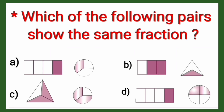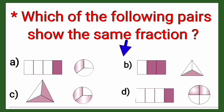Each option has two figures. Let's see which pair has the same fraction. In option A, the fraction of the first figure is 1/4 and the second figure is 1/3 — two different fractions. In option B, the fraction is 2/3 and the other figure is 1/3 — again not the same.